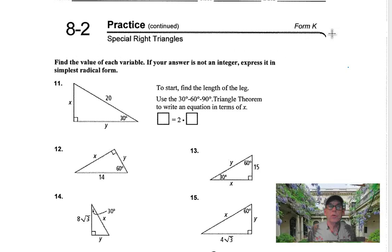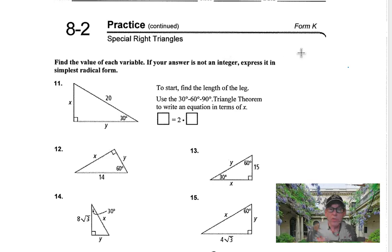This is side two of the 8-2 practice Prentice Hall special right triangles. This side focuses on 30-60-90 triangles.